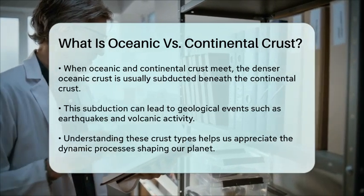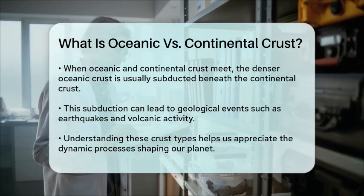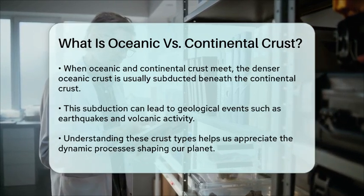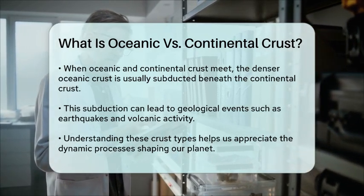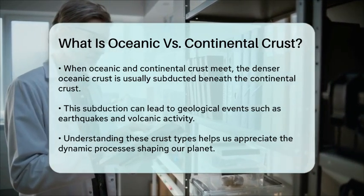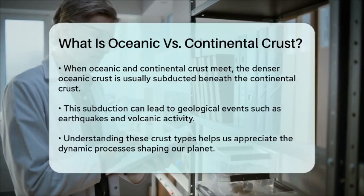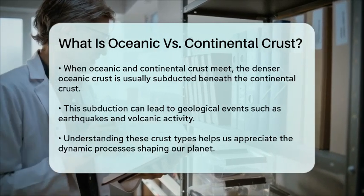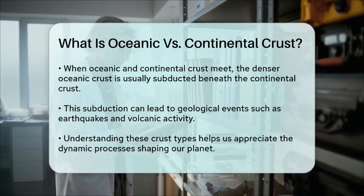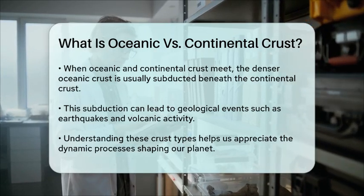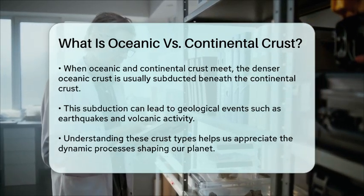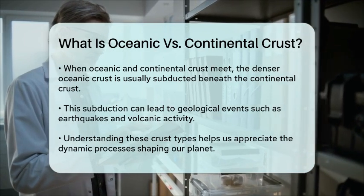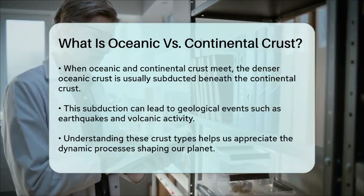In summary, Oceanic Crust and Continental Crust are two distinct layers of the Earth's crust, each with unique properties and functions. Understanding these differences helps us appreciate the dynamic nature of our planet and the processes that shape it. So, the next time you find yourself by the ocean or on solid ground, remember the fascinating layers that lie beneath your feet.